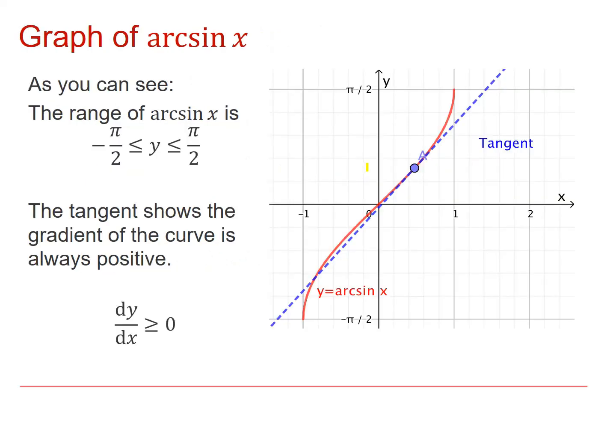This is a graph of arcsin x, and you can see that its range is between minus pi by two and plus pi by two. Its domain is between minus one and one, because sine can only take values between minus one and one.